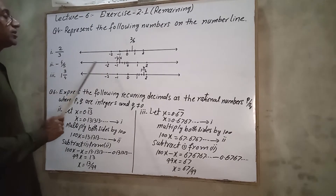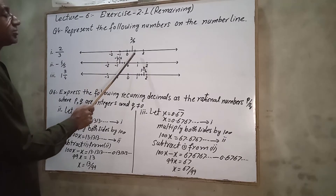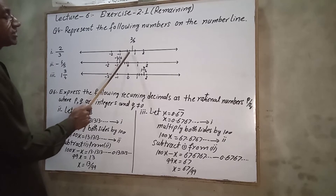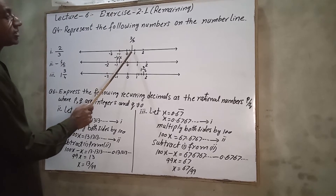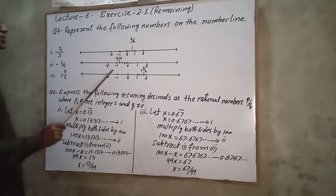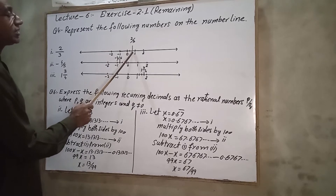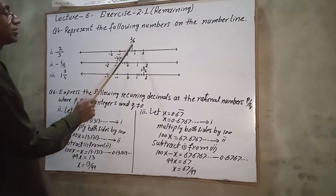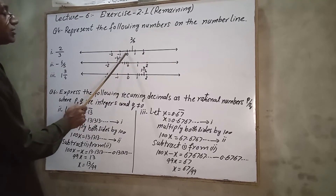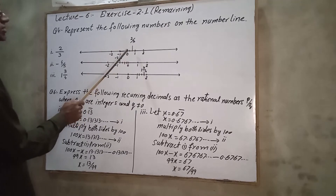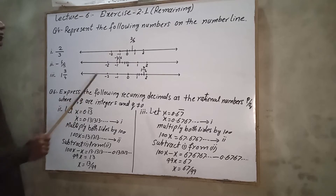2/3 lies between 0 and 1, so we divide this interval into 3 equal parts. We need 3 parts to divide the section. Then we count 2 parts from 0, and that point represents 2/3. Remember: the denominator tells us how many equal parts to divide into.